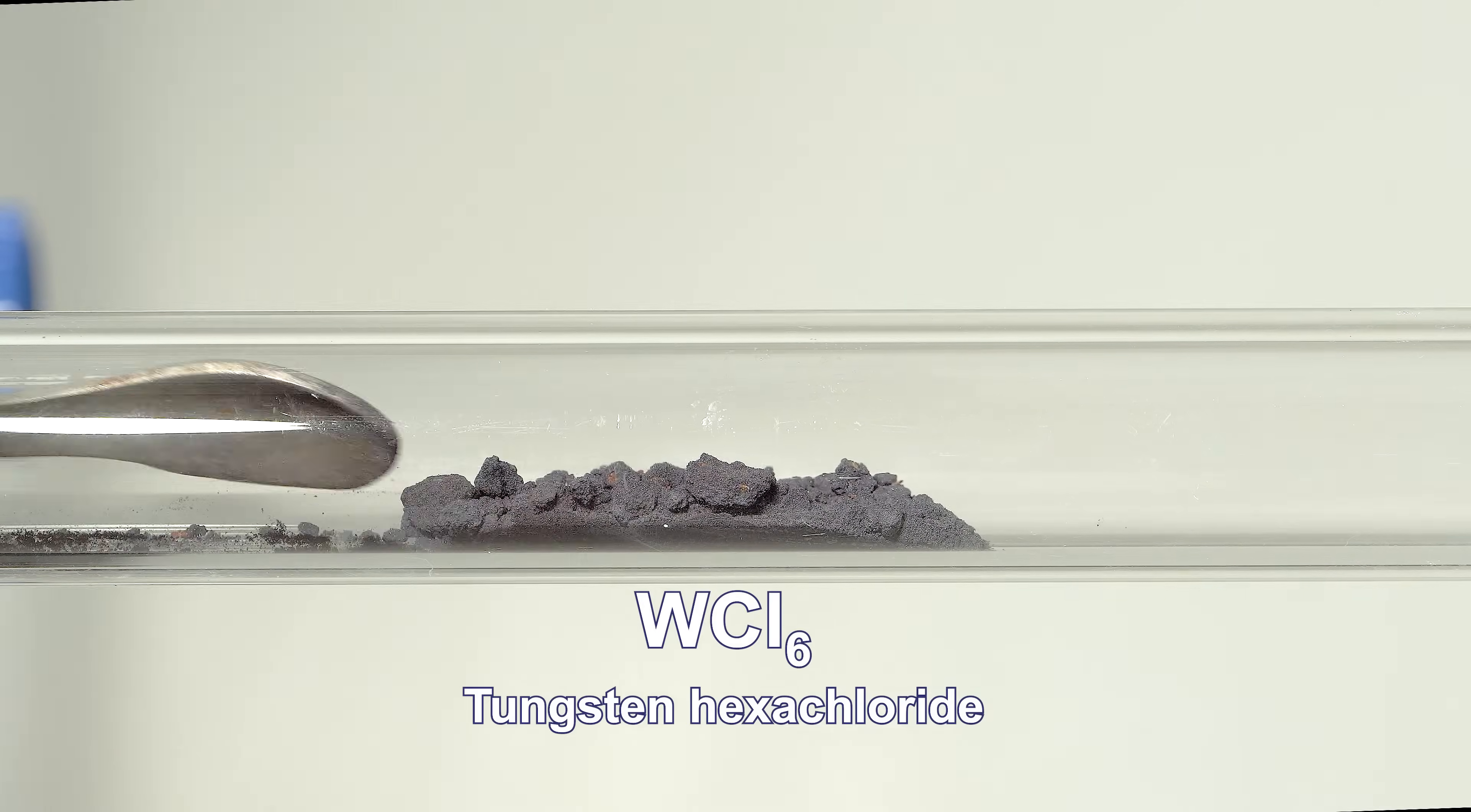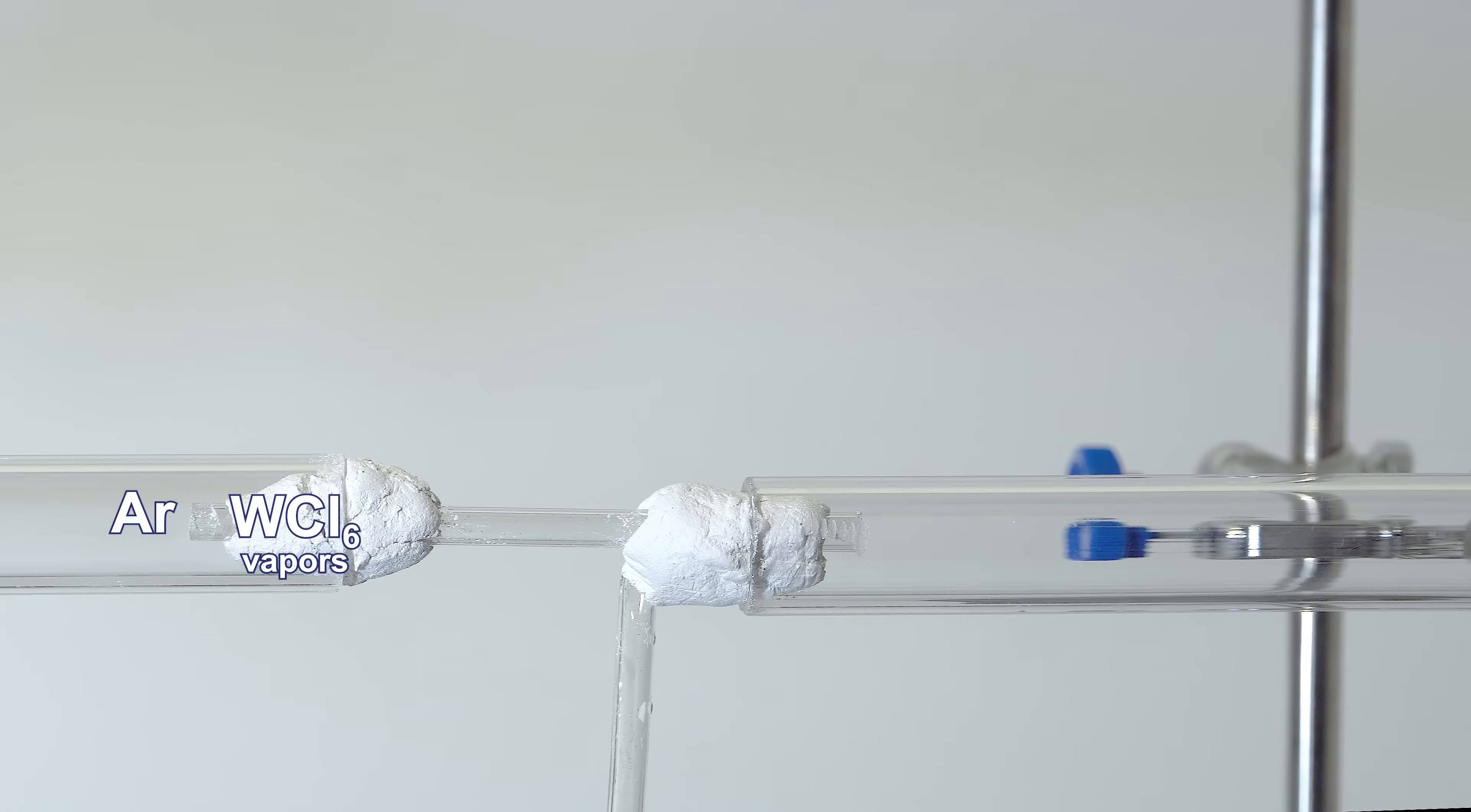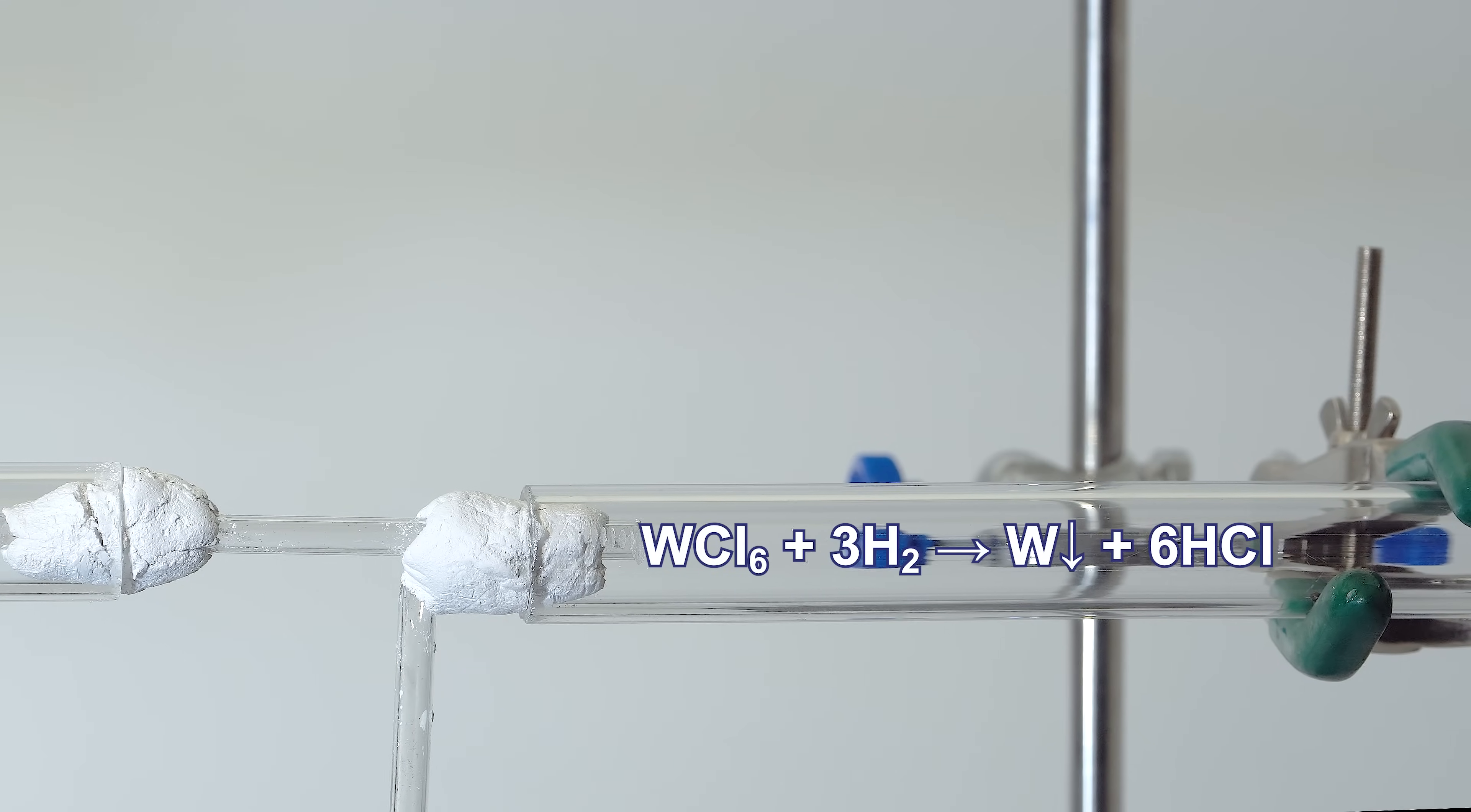I'll heat the tungsten hexachloride in the left tube connected to the argon supply. The argon will transport the resulting tungsten hexachloride vapor into the right tube connected to the hydrogen supply. The right tube needs to be heated vigorously with a gas burner, as this reaction demands temperatures exceeding 500 degrees Celsius.